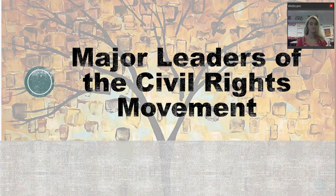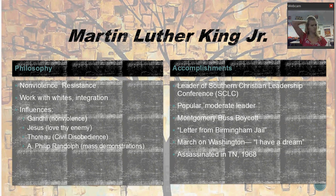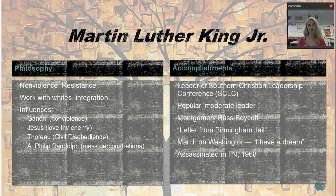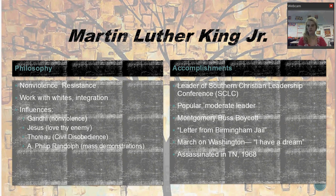We're going to start with probably the most famous leader of the civil rights movement, which is Dr. Martin Luther King. Dr. King was a pastor named after Martin Luther, who was the Protestant Reformation leader from the Renaissance era. He first came into public knowledge when he was living in Montgomery and was chosen to be the leader of the Montgomery bus boycott. His main philosophy was nonviolent resistance. He really believed that if we show that we are better and not willing to succumb to what people are doing to us, we will be able to integrate peacefully.